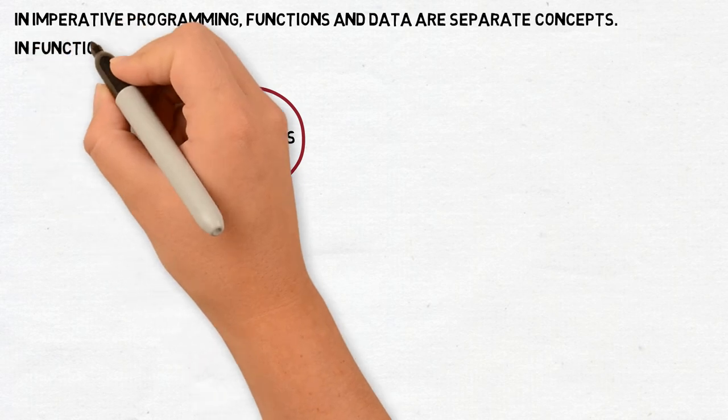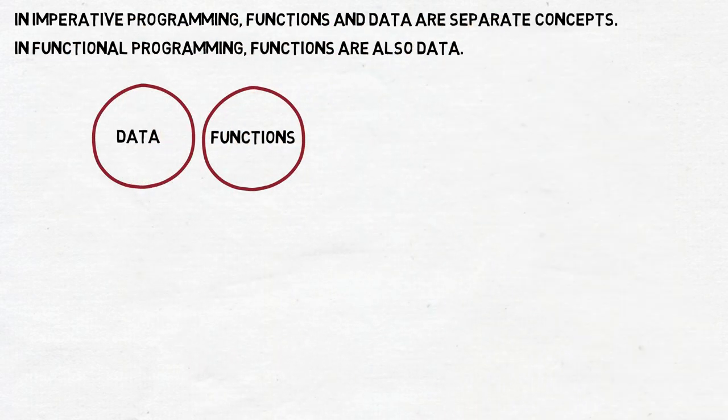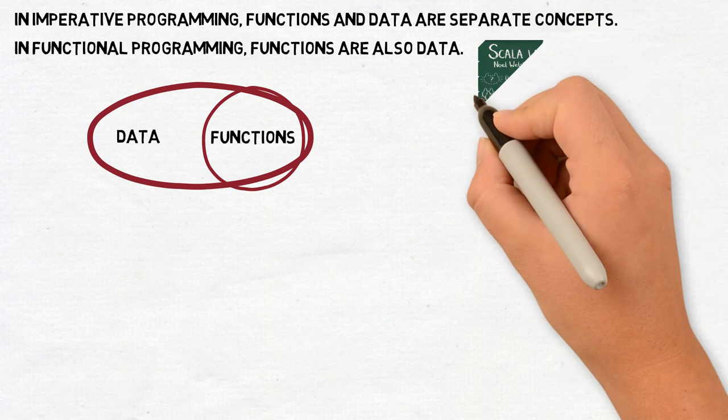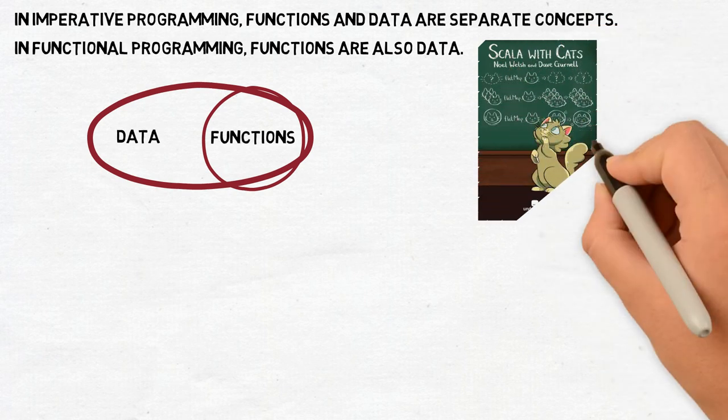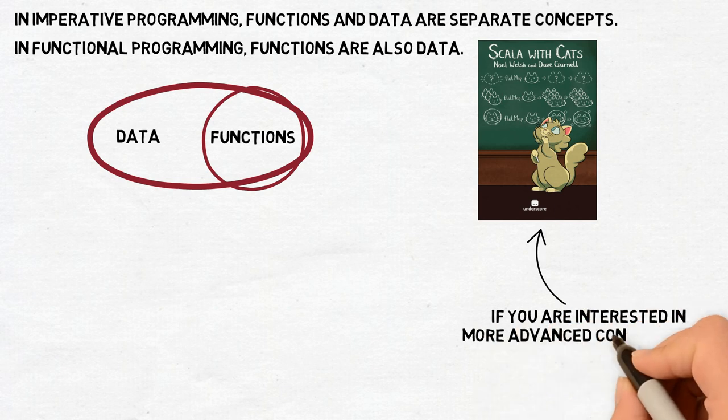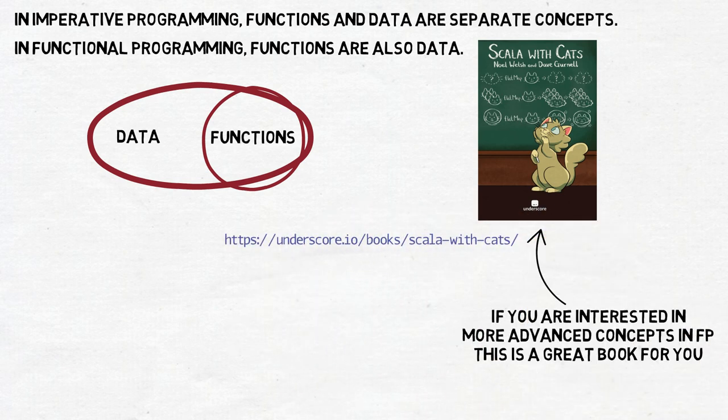In functional programming, functions are also data. Data which tells us what to do with other data. We can use a function as an argument for another function, so that higher order function will be able to use it at some point of its own operation. If you wonder how it can work in practice, I will give you just the first of many examples.